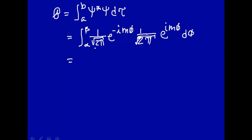One over the square root of 2 times one over the square root of 2, that's just one over 2π. And e to the minus times e to the plus is equal to 1. So this would just be the integral from alpha to beta of 1 dφ.